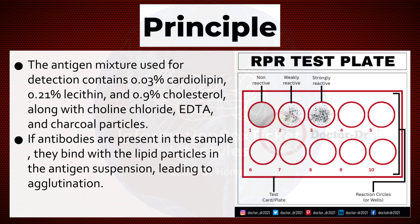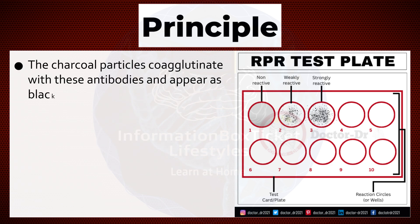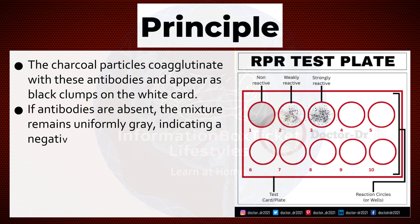If antibodies are present in the sample, they bind with the lipid particles in the antigen suspension, leading to agglutination. The charcoal particles co-agglutinate with these antibodies and appear as black clumps on the white card. If antibodies are absent, the mixture remains uniformly gray, indicating a negative result.